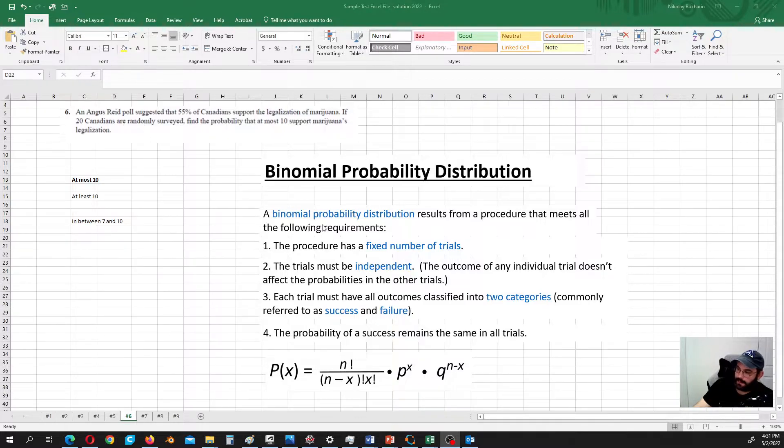Okay, so in this case we have a fixed number of trials. So we are asking 20 Canadians. Trials are independent. So the opinion of one person does not affect the opinion of the other person.